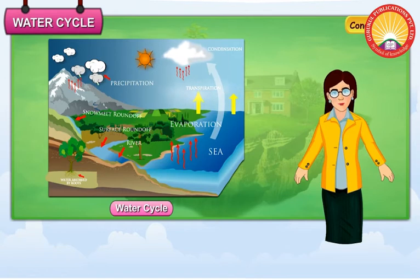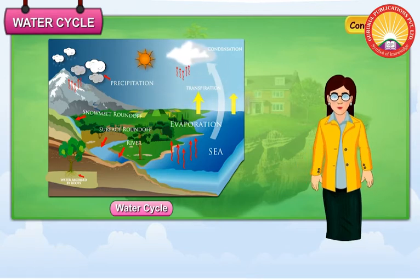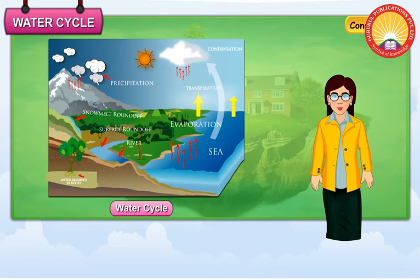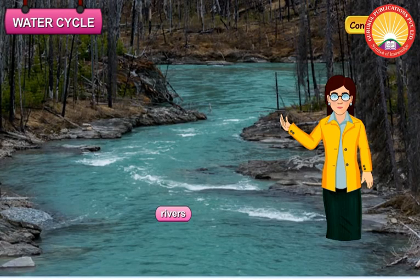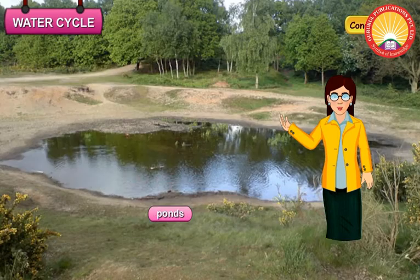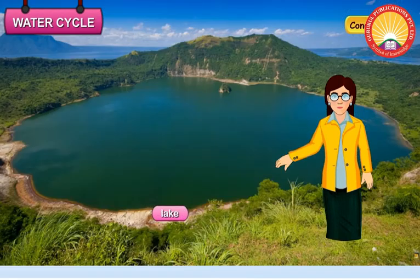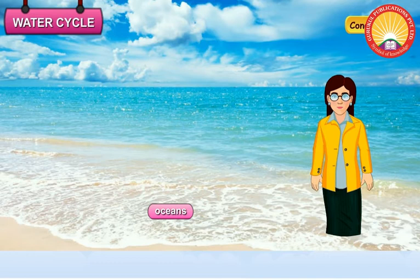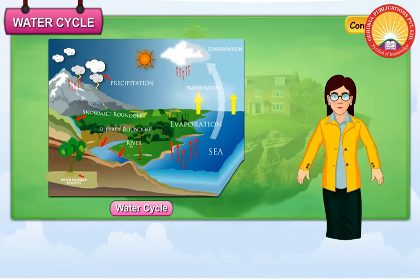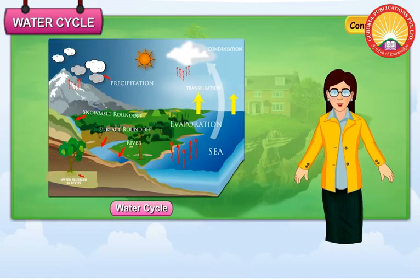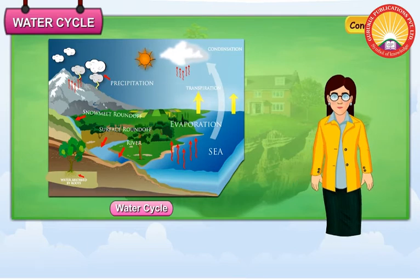On cooling further, these tiny drops become heavy and fall as rain. The rainwater flows back to rivers, ponds, lakes, and oceans. This cycle of change in different states of water is called the water cycle.